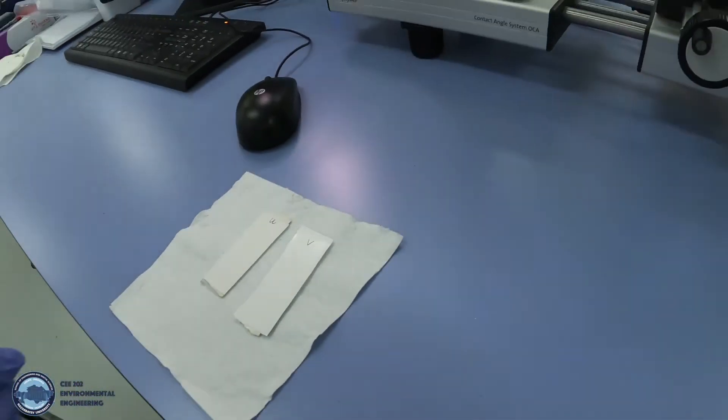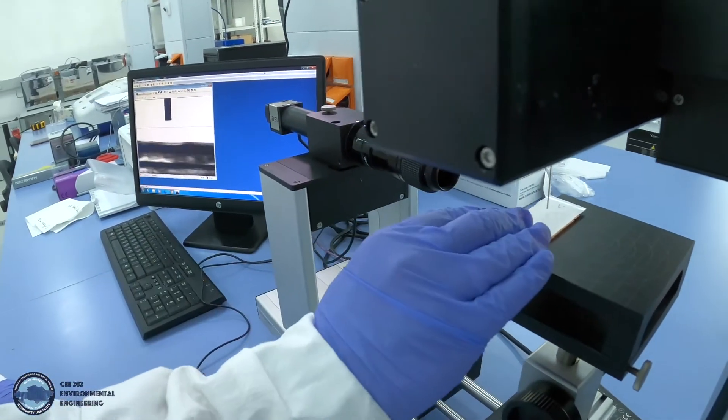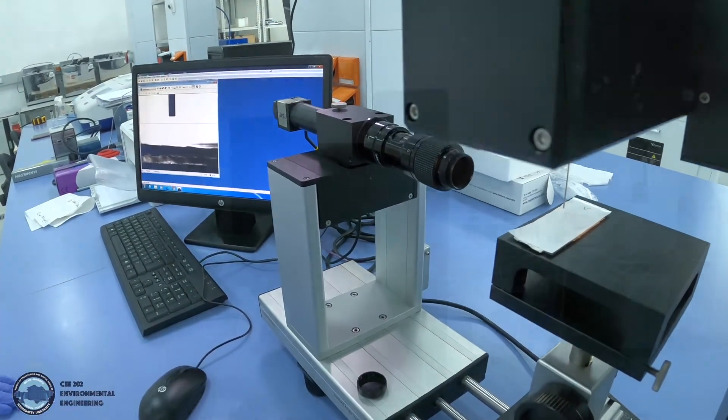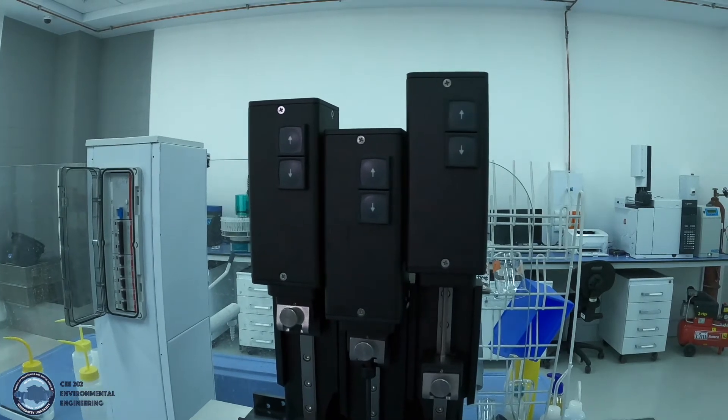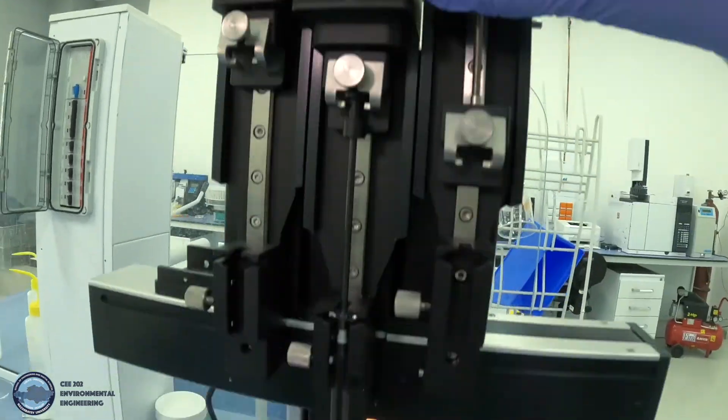After that, we will place our first sample, virgin membrane, on the device's table. Next, on the device we will press button with arrow down symbol and release the water drop.